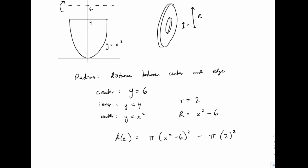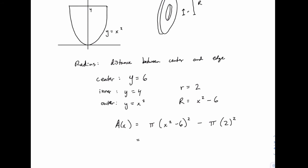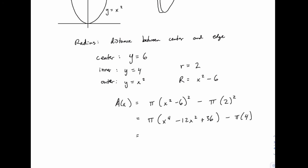So it may be helpful here to simplify this a little bit. We could write this as pi times x to the fourth minus 12x squared plus 36 minus pi times 4. And then of course we can combine things. The 36 minus 4 will give us 32. So that's our area function simplified a little bit.